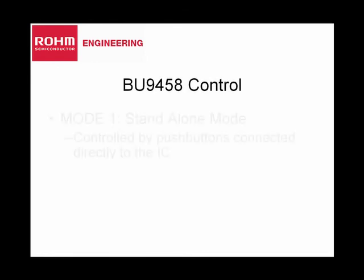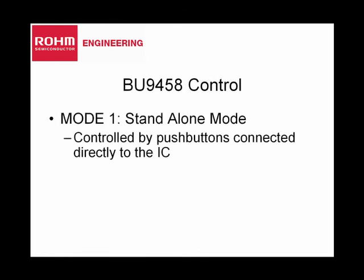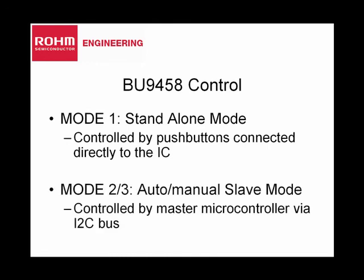This chip can be controlled in two ways. The first is in a standalone mode, referred to as mode 1, which allows the user to control the function of the chip by using push buttons connected directly to the IC. The second is by means of an I2C bus when connected to the master microcontroller, set in one of its slave modes, referred to as modes 2 and 3.